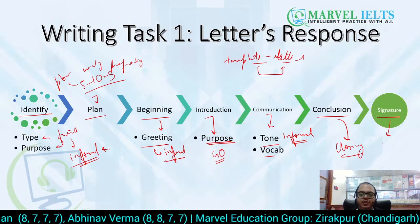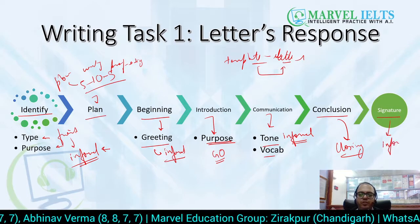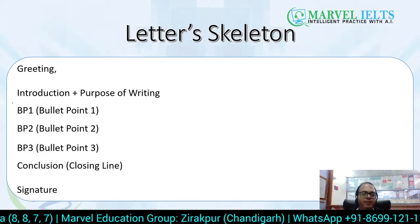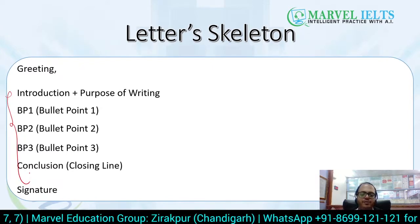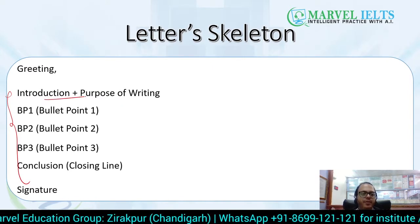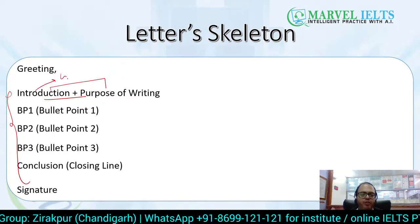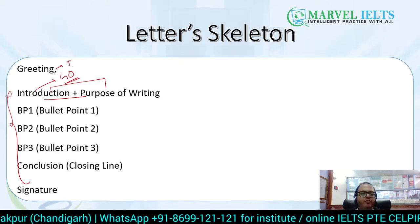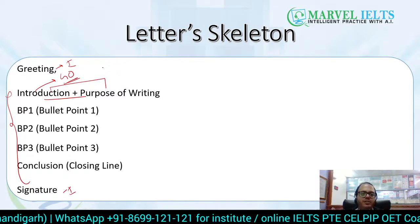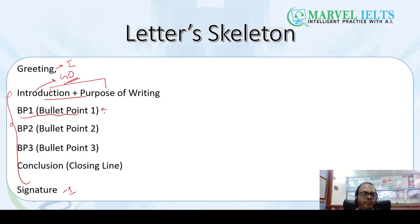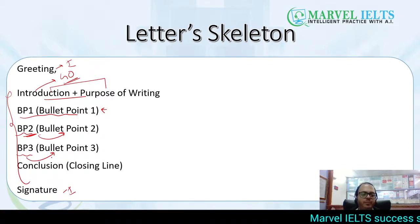In terms of signatures, you have to vary them based on the type of letter. So here we are going to use informal signatures. The skeleton remains the same: we use four or five paragraphs. The opening paragraph contains the introduction and purpose of writing. Body paragraph one covers bullet point one, body paragraph two covers bullet point two, and body paragraph three covers bullet point three. So we are going to cover every bullet point in one paragraph.